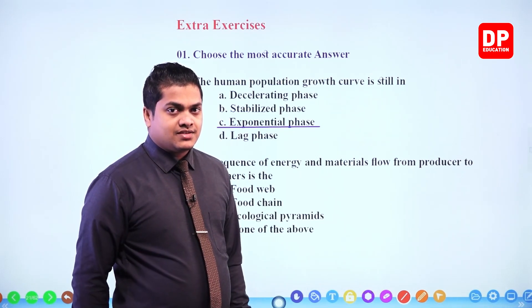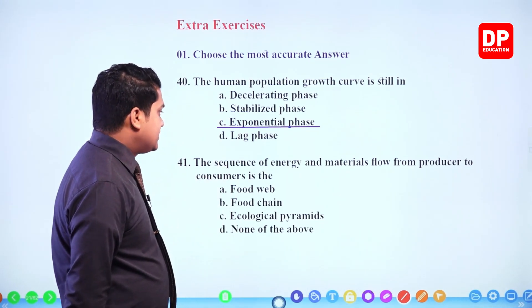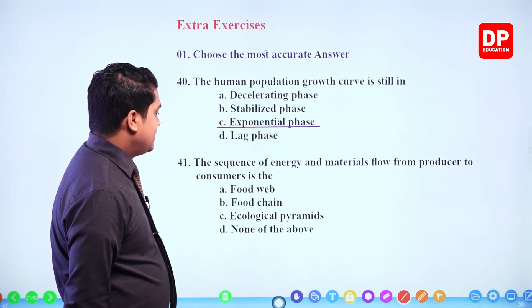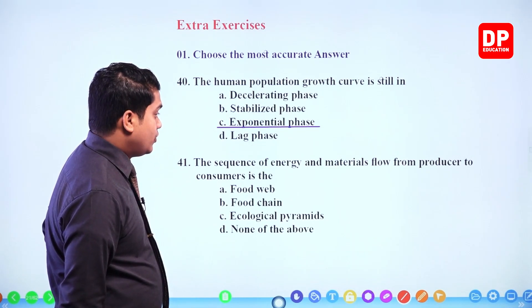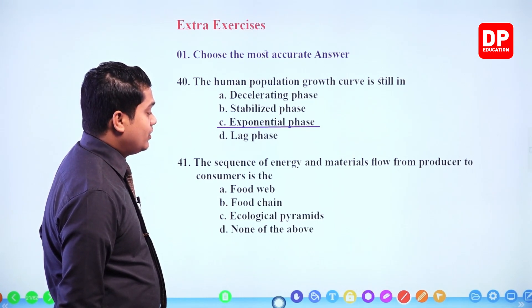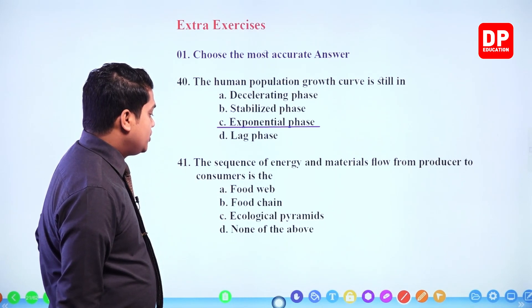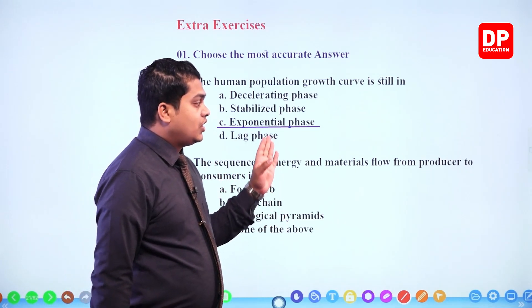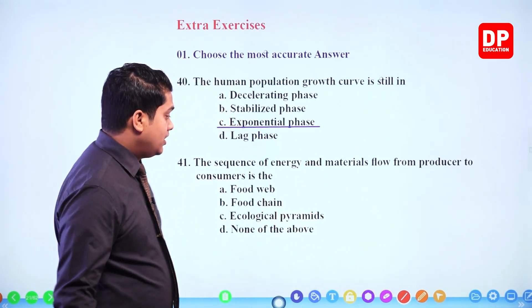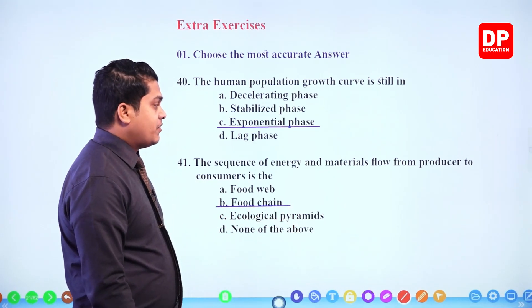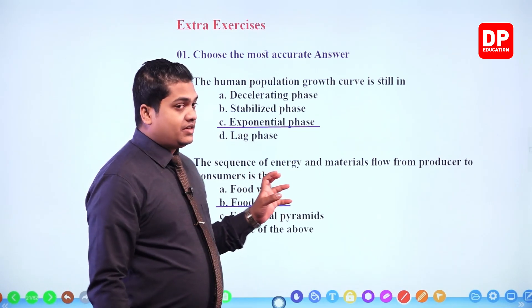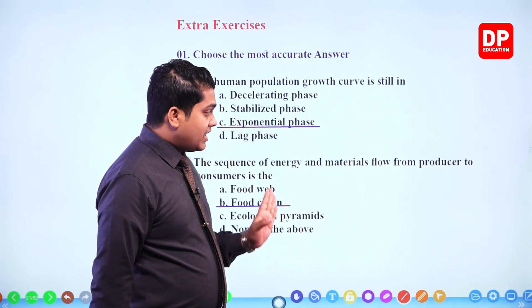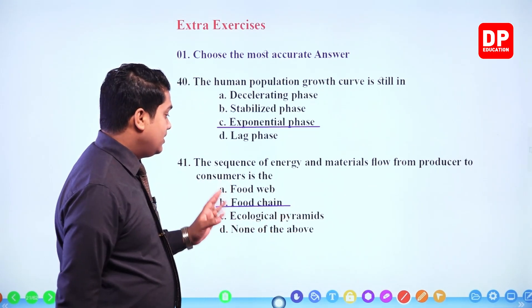Next: the sequence of energy and materials flow from producer to consumers is shown by — food web, food chain, ecological pyramids, or none of the above. The relationship between different organisms for their food is shown by food webs. However, the energy flow and material flow from producer to consumers is directly indicated by food chains. So the answer is food chain.